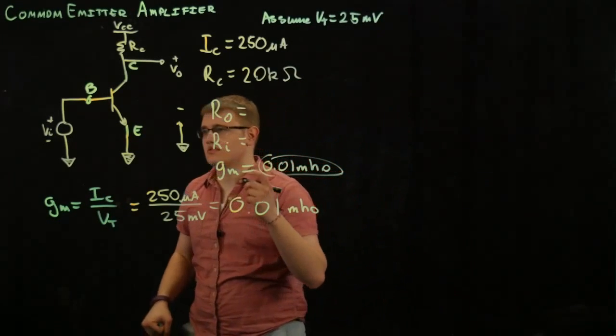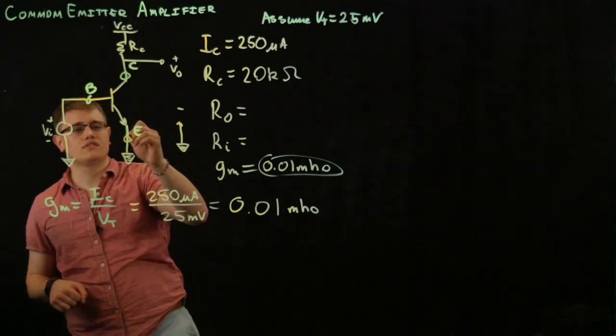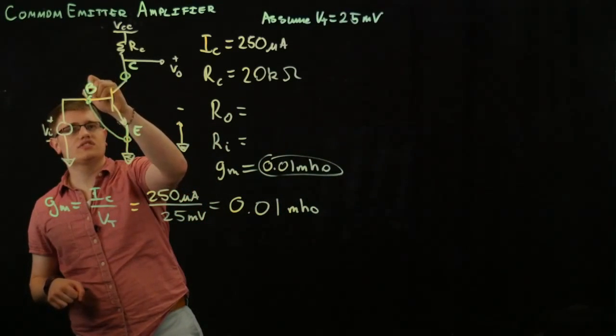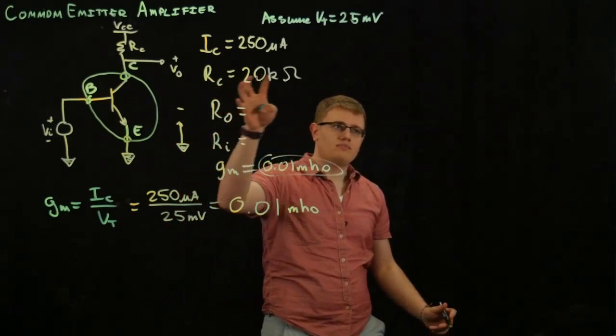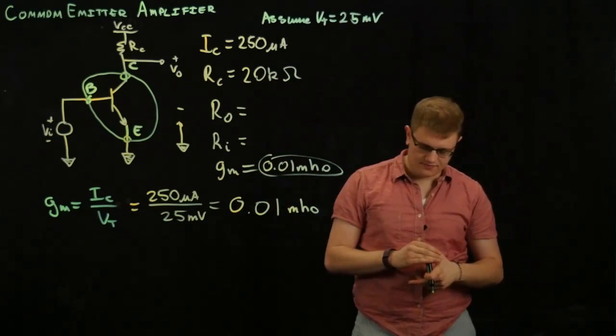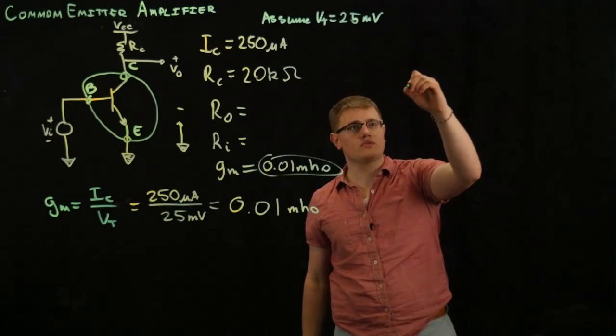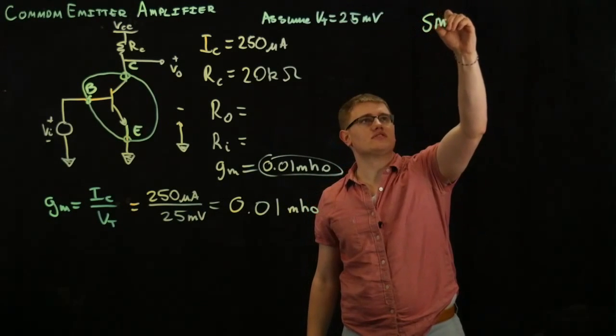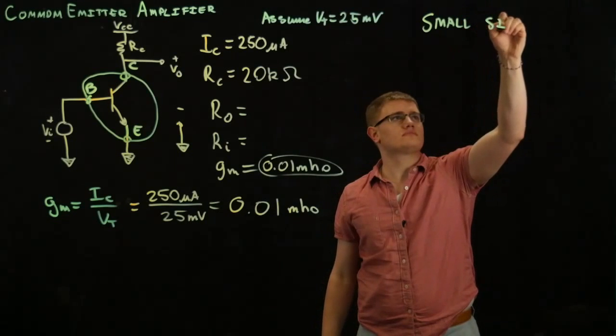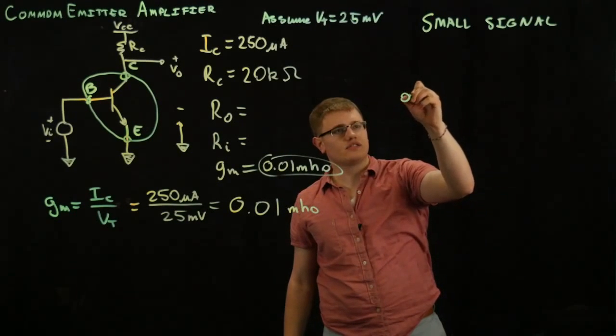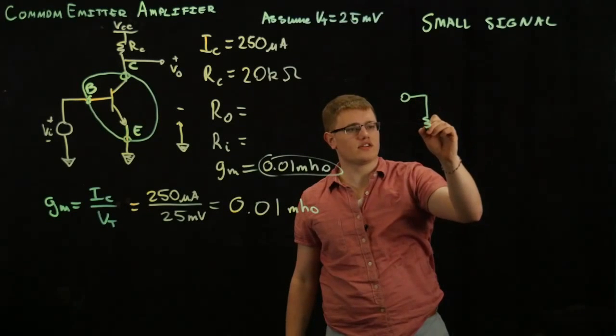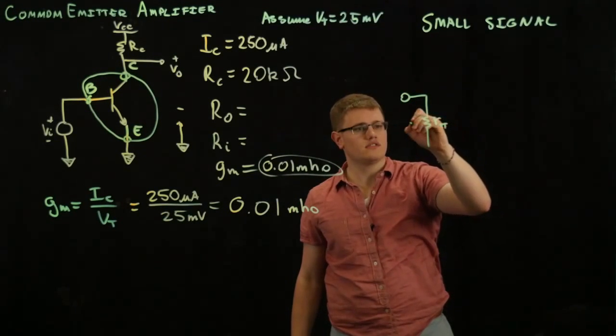So, first we'll translate this BJT just into the pure hybrid pi model without connecting anything. So, we're going to be translating it from here. Just cutting this BJT out, right? And then putting it over here in AC analysis. So, what do we have? We will have, label this small signal.